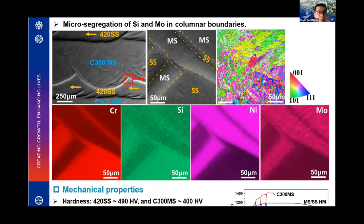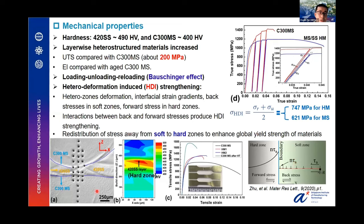For the mechanical properties, hardness mapping across the interface shows a high-hardness region and a low-hardness region: MS has a lower hardness of about 400 HV while SS has a higher hardness of about 490 HV, creating a hard zone and a soft zone. Tensile testing shows the heterostructured (HM) material has higher strength than constituent maraging steel MS, and also higher elongation compared with heat-treated MS, filling the property gap of the constituent MS material.